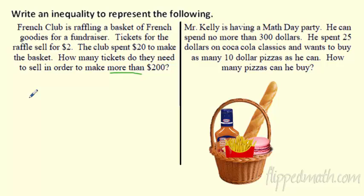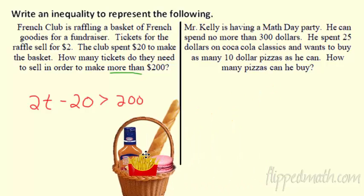They're going to make $2 per ticket. So I make $2 per ticket, but do I gain this $20 or lose it? They actually spend it. So they're going to lose $20. They have to spend 20 bucks on the French dressing and the baguette and all that good stuff. And I don't want to equal, if this was an equation, it would equal $200, but I need to make more than $200. So $2 per ticket. I lost $20 to make, to buy the goods, but I'm going to make more than $200. So it's kind of like a running total of my money.